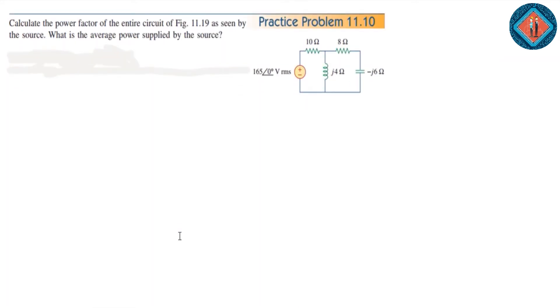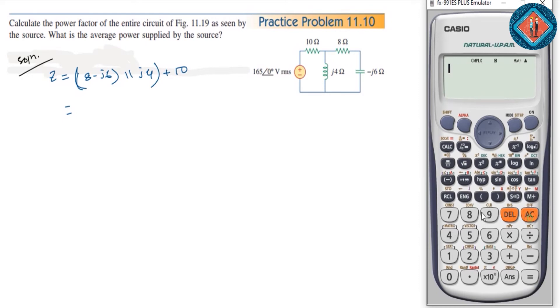Now for Practice Problem 11.10. We calculate the impedance: minus j6 parallel with 4, plus j10. This gives us 12.7 at angle 22.62 degrees.